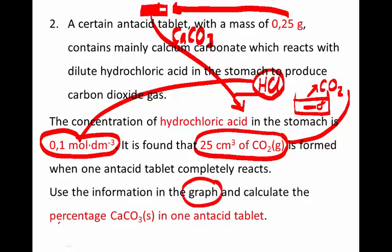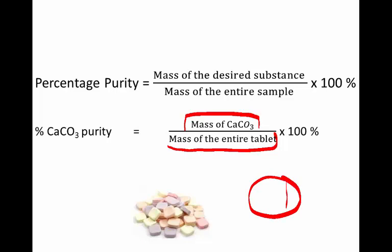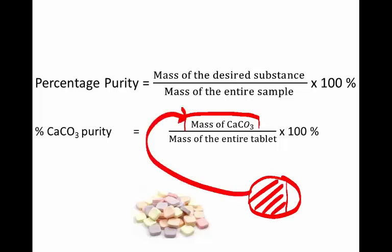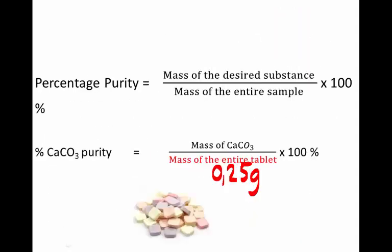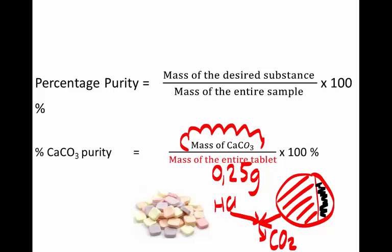The concentration of the hydrochloric acid is 0.1 molar. We need to use the graph to calculate the percentage purity of the calcium carbonate in one antacid tablet. The percentage purity is the mass of calcium carbonate inside the tablet divided by the mass of the entire tablet. If we know how many grams of the tablet was actually calcium carbonate and divide by the mass of the whole tablet, we find our answer. It's only the calcium carbonate component that reacts with hydrochloric acid to form carbon dioxide — the impurity cannot do that.